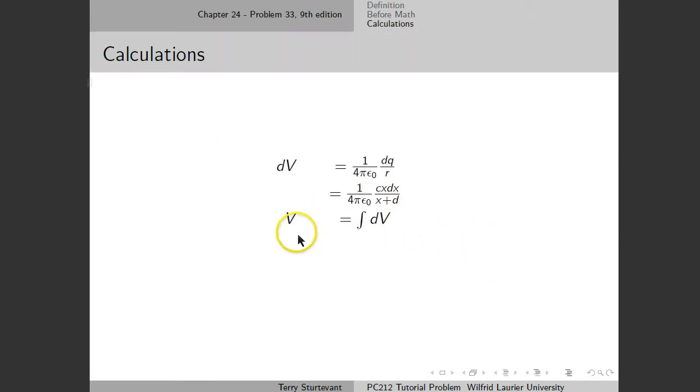So here we have it. The potential is going to be the integral of all these little infinitesimal potential elements. And that integral will be over the distance from 0 to L, because that's where all the charge is. So now we simply have to do the calculus to do this integral.